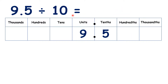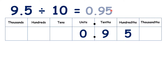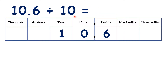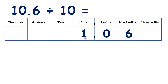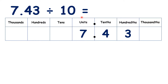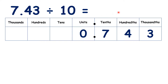For 9.5 divided by 10, we move the digits one place to the right, so we have 0.95. For 10.6 divided by 10, we move the digits across, and this time we don't have an empty units column, so we can just write the answer as it appears here — that's 1.06. For 7.43 divided by 10, we move the digits one place to the right and write a 0 in our empty units column, so we have 0.743.